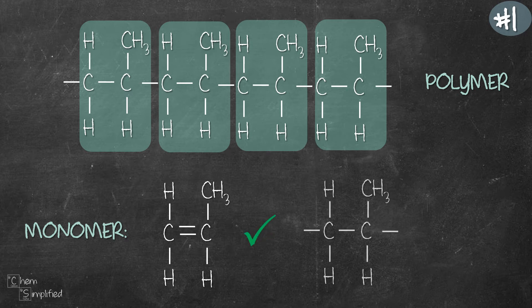If you drew out the monomer like this, that's wrong. Only polymers have open-ended bonds. Monomers don't and they should have double bonds in their structure.